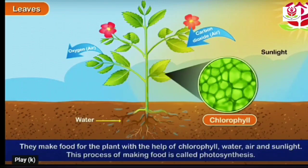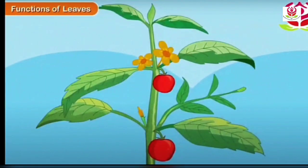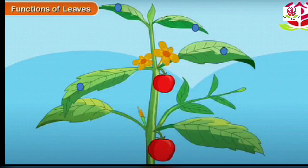Children should repeat this word: photosynthesis. Here, chlorophyll means it gives green color to the leaves. Let's learn the functions of leaves. Leaves prepare food for the plant. They also help the plant breathe by taking in air — that is, they take in carbon dioxide through tiny openings.